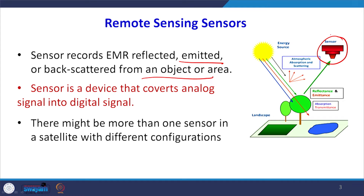The sensor converts the analog signals entering it into digital signals. Every satellite can have more than one sensor, with different configurations and characteristics, so we can get multi-resolution and multi-spectral data from these sensors. This process is called analog-to-digital, or A-to-D, conversion.